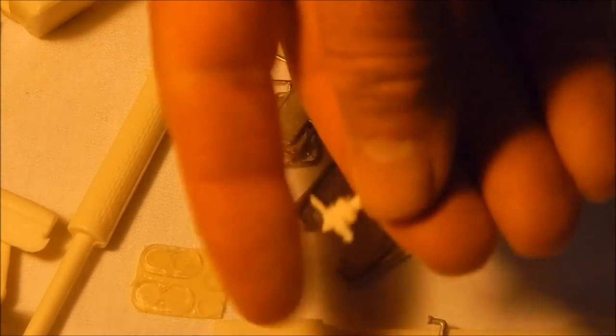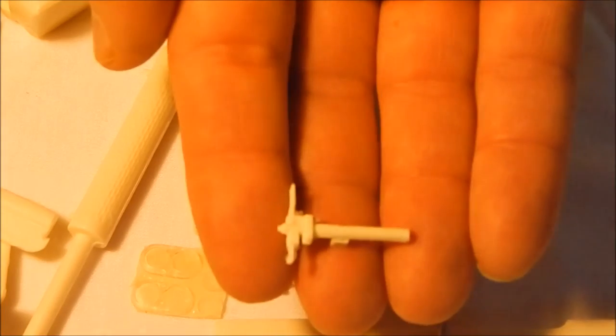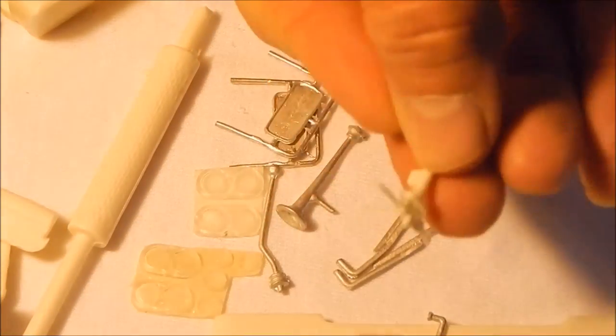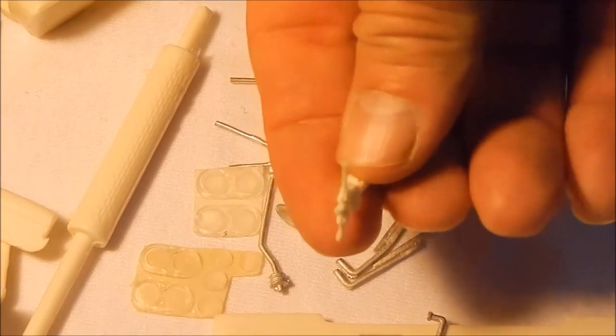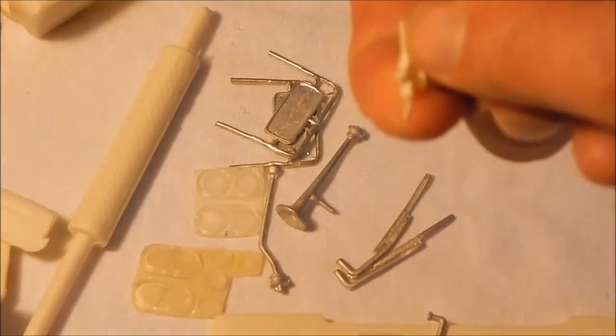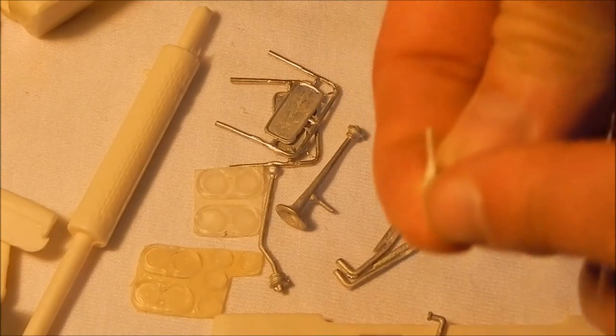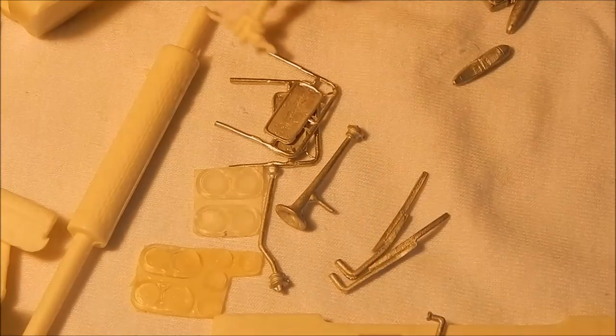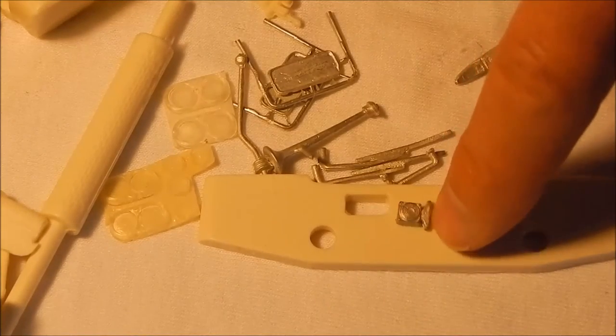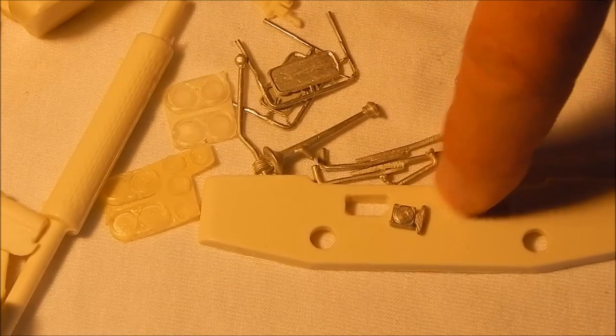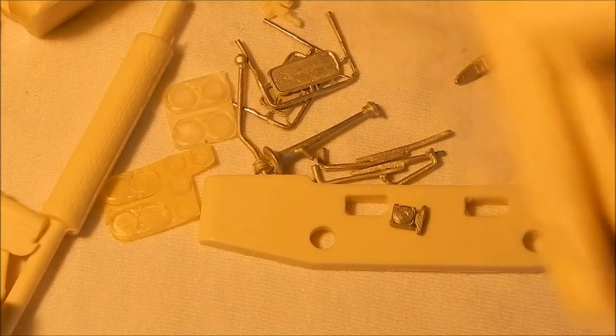And then here's the steering column with the turn signal switch and the trailer brake handle. This is actually the turn signal here and then you have the trailer brake handle. We have the side marker lights, the turn signals that would go on the side of the cab, and your clearance lights.